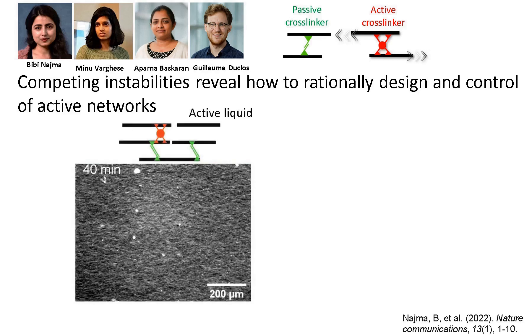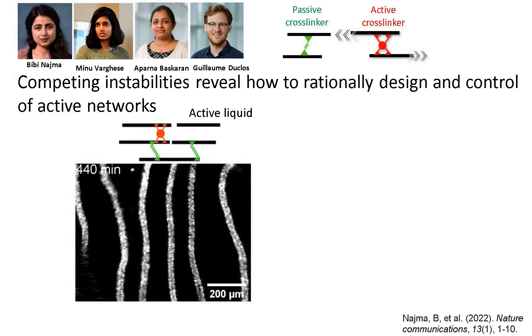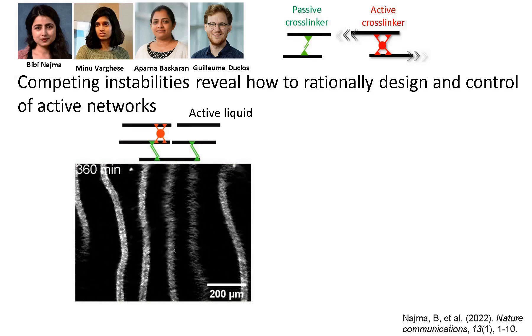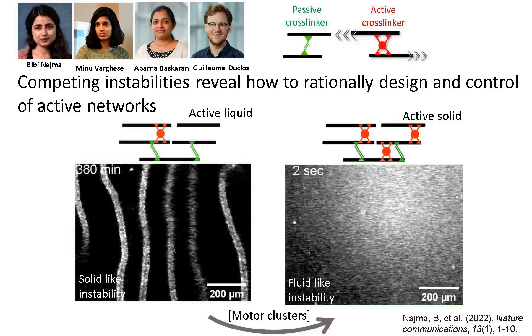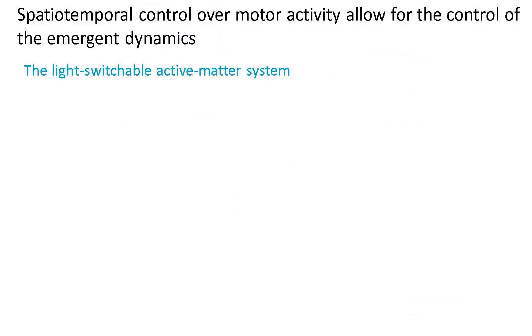For example, at low motor concentrations, the active network is over-constrained due to the presence of crosslinkers, and buckles out of plane like an active elastomer. At high motor concentrations, the network is under-constrained, and spontaneously bends in plane like an active fluid.